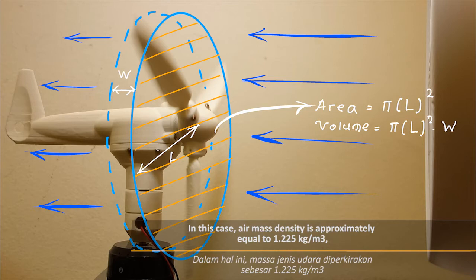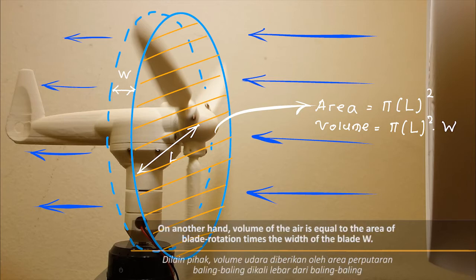In this case, air mass density is approximately equal to 1.225 kg per meter cubed. On the other hand, volume of the air is equal to the area of blade rotation times the width of the blade, W.